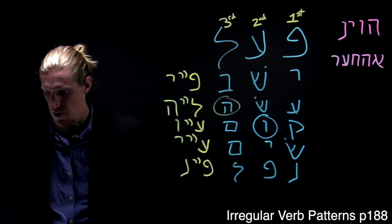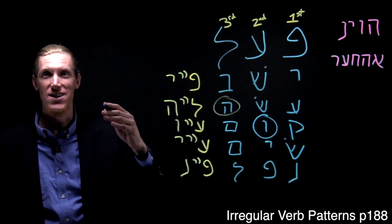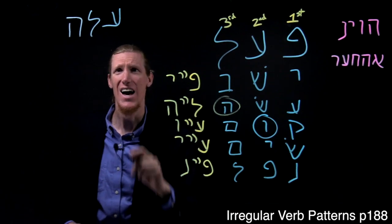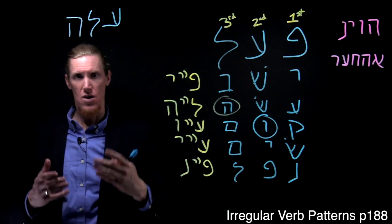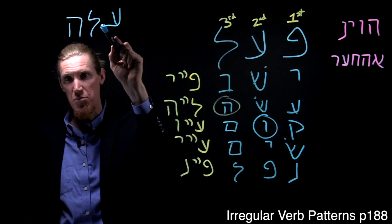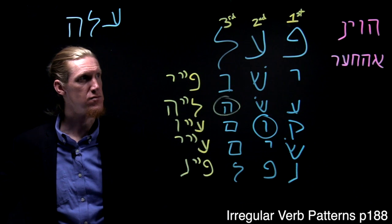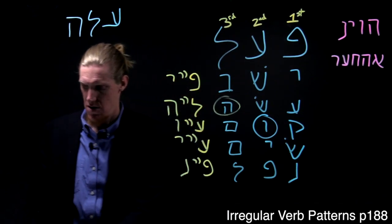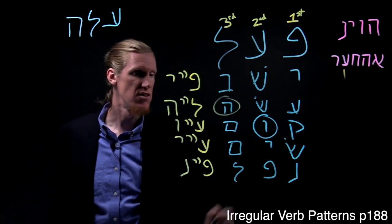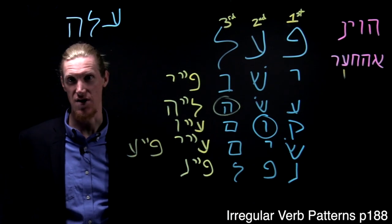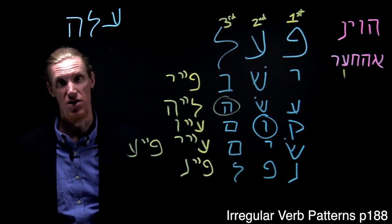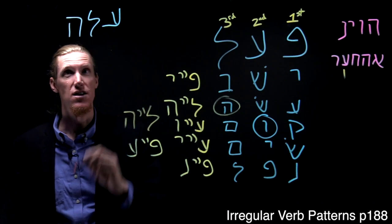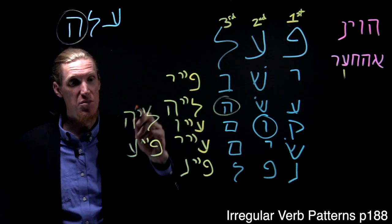So let me give you an example and you tell me, or you tell yourself because I won't be able to hear you, what pattern this word falls into. Okay, Alah. Guess from each of these three different examples what pattern would this verb fall into. Perhaps you said Pei Ain, because the first letter is a guttural, right? Pei Ain. You would be correct if you said that. What else? What other pattern could this verb fall into? Perhaps you're thinking Lamed Hey, because the final root letter is Hey. If you said that, you're also correct. It can be either one of those.